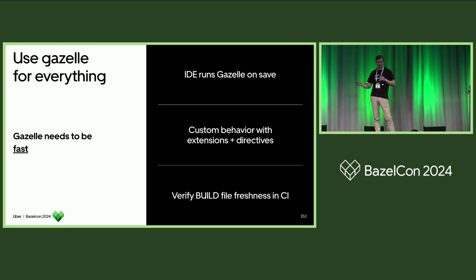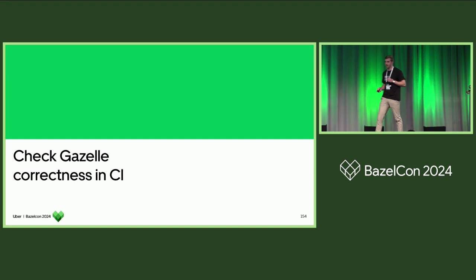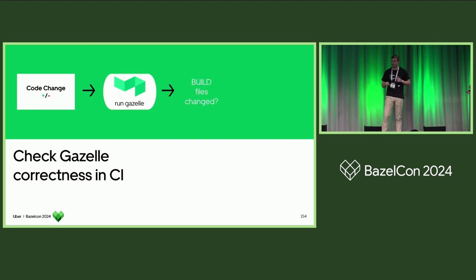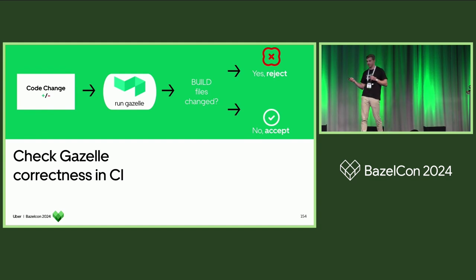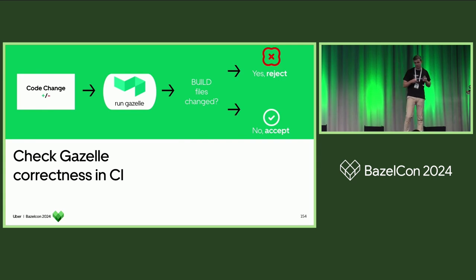And then we want to verify correctness on CI. Because of this, we run Gazelle everywhere, so it needs to be pretty fast. One of the main places it needs to be fast is in CI. The main thing is we take the code change, we run Gazelle, we see if any of those build files changed, and then we reject it if build files did change. This is because we want the build files to always be fresh so developers don't see random changes to their build files from other people's code changes.